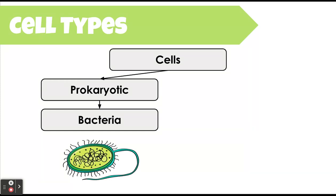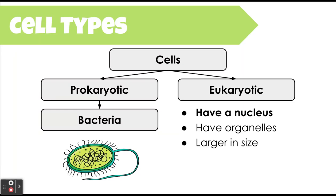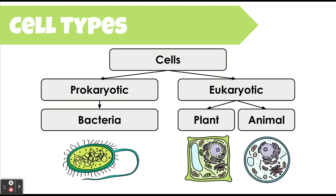If a cell is not prokaryotic, we say it's eukaryotic, or the organism is a eukaryote. That means they have a nucleus inside of their cells and they will also have many more organelles. Because there's a nucleus and more organelles, they typically are much larger in size compared to prokaryotic cells. Eukaryotic cells are broken up into two categories themselves: either they are plant cells, making up plant organisms, or animal cells found inside of animals.